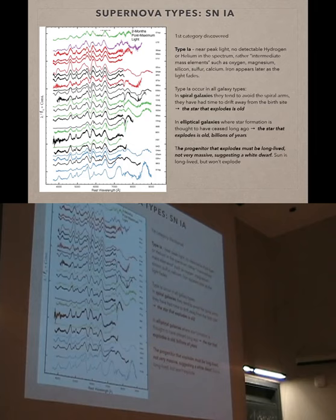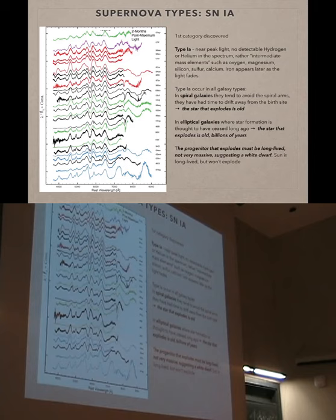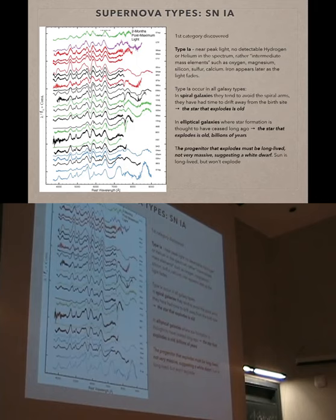Let's talk about Type Ia supernovae. The key characteristic is that they don't show hydrogen — that's the definition of Type I — but later on we see intermediate mass elements: oxygen, magnesium, sulfur, calcium. As you follow the evolution of the supernova by taking spectra at different epochs along the light curve, you can see how the spectrum changes over time. As the supernova cools and becomes more transparent you can see deeper layers, and in Type Ia supernovae, later on we see a lot of iron, which tells us something about the explosion properties. Looking at the shape of these spectral lines, they're pretty similar for Type Ia supernovae — and that's what defines a class: sharing similar characteristics.